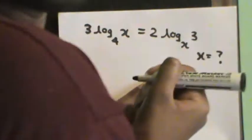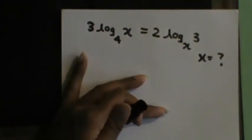So the first example is something like this: 3 log 4 to the base x is equal to 2 log x to the base 3 — just some arbitrary values. The question is: find the value of x.